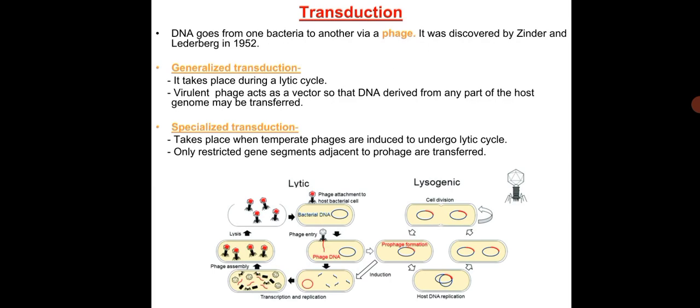Transduction is the process in which DNA is transferred from one bacterium to another by means of a bacteriophage. It was first discovered by Zinder and Lederberg in 1952. Generalized transduction takes place during the lytic cycle, where a virulent phage acts as a vector transferring DNA from any part of the host genome. Specialized transduction occurs when a temperate phage or prophage is induced into a lytic cycle by mutagens, transferring only bacterial genes adjacent to the prophage.